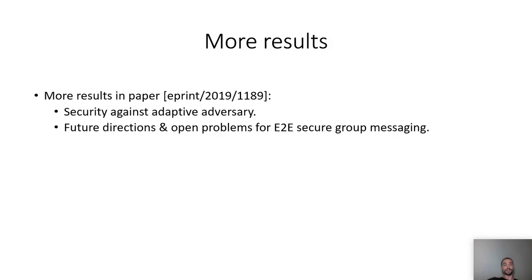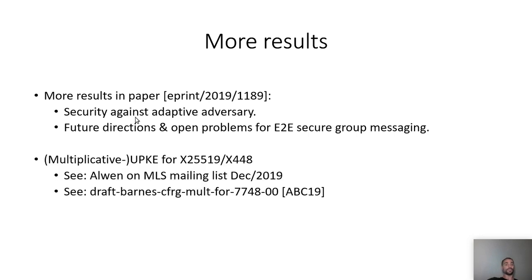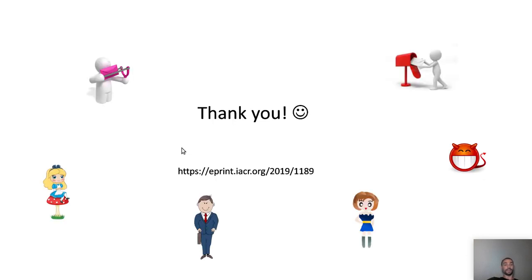In the paper we have more results, including security against adaptive adversaries, and we also propose future directions and open problems for secure group messaging. There are also additional topics like multiplicative UPKE for elliptic curves — you can check the post by Joelle in the MLS mailing list and also a draft on this topic. That's all — this is our ePrint version of the paper. Thank you.